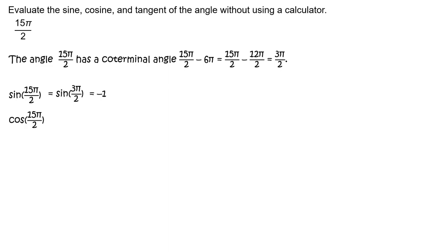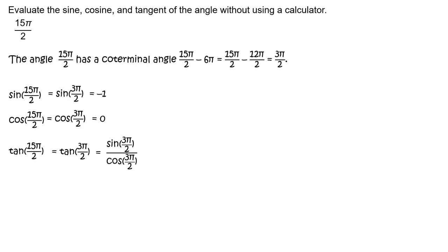Cosine of 15 pi halves equals cosine of 3 pi halves, which equals 0. Tangent of 15 pi halves equals tangent of 3 pi halves, which equals sine of 3 pi halves divided by cosine of 3 pi halves, which equals negative 1 divided by 0. Note: because division by 0 is undefined, tangent of 15 pi halves is undefined.